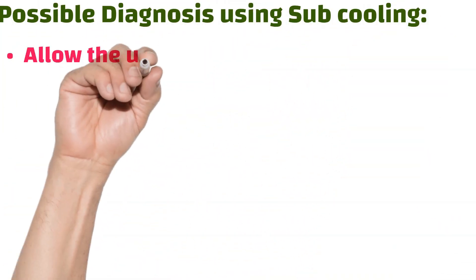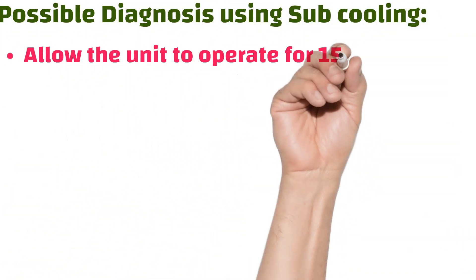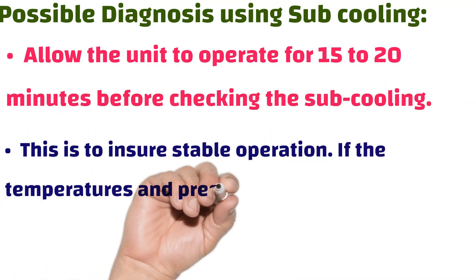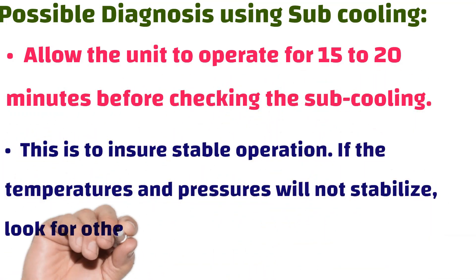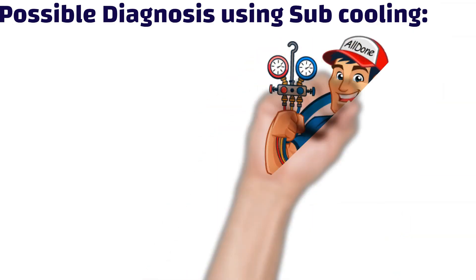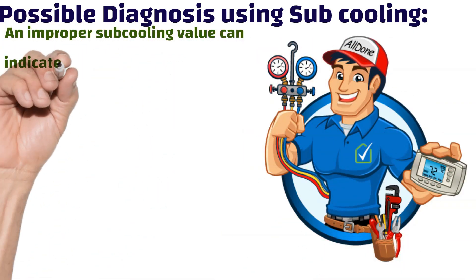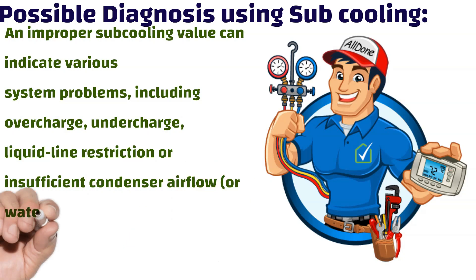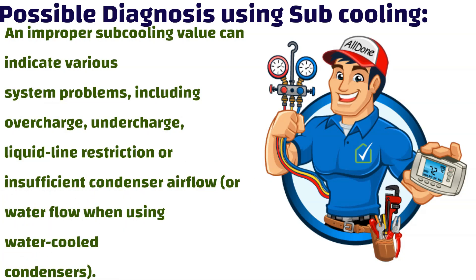For diagnosis using sub-cooling, allow the unit to operate for 15 to 20 minutes before checking sub-cooling to ensure stable operation. If the temperatures and pressures will not stabilize, look for other problems before attempting to check sub-cooling. An improper sub-cooling value can indicate various system problems including overcharge, undercharge, and liquid line restriction.